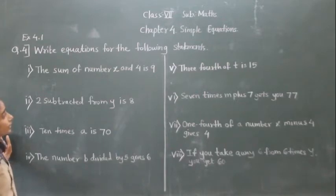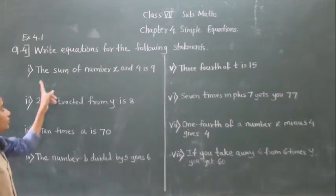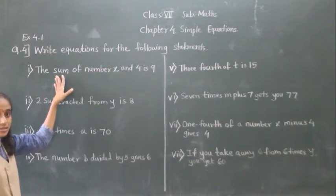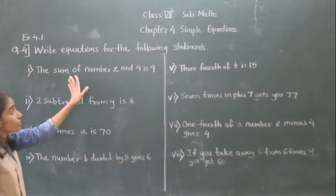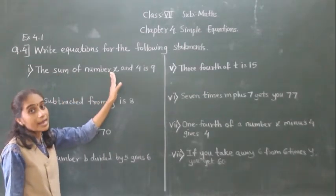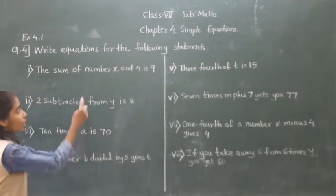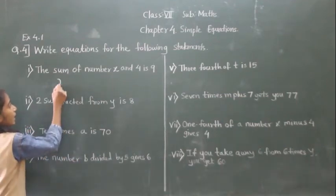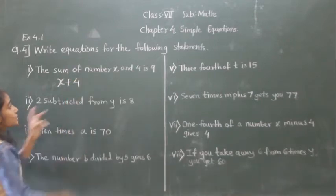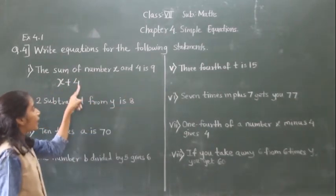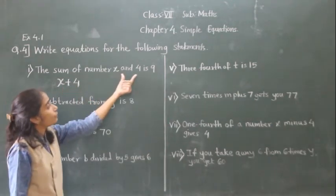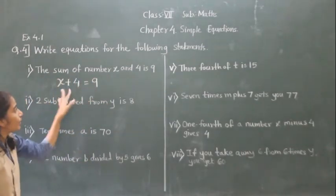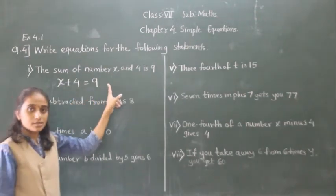The sum of number x and 4 is 9. 'Sum' means the answer in addition. So the sum of x and 4 is 9, which gives us x plus 4 is equal to 9.